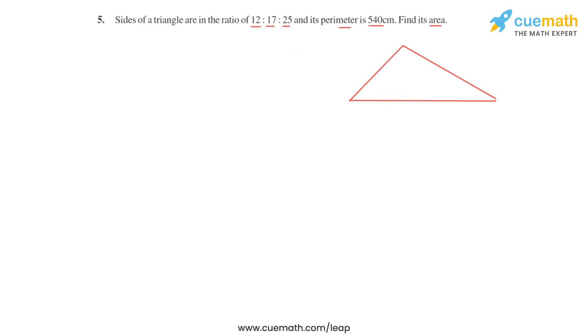So let's first draw a triangle and now if we take the common ratio between the sides to be as x, we can say that the three sides are 12x, 17x and 25x.